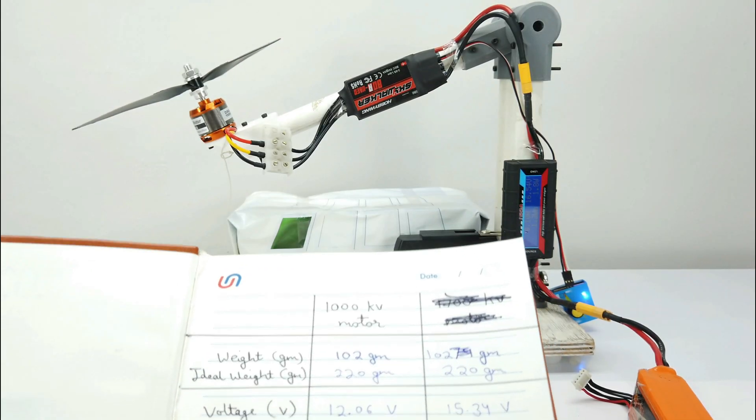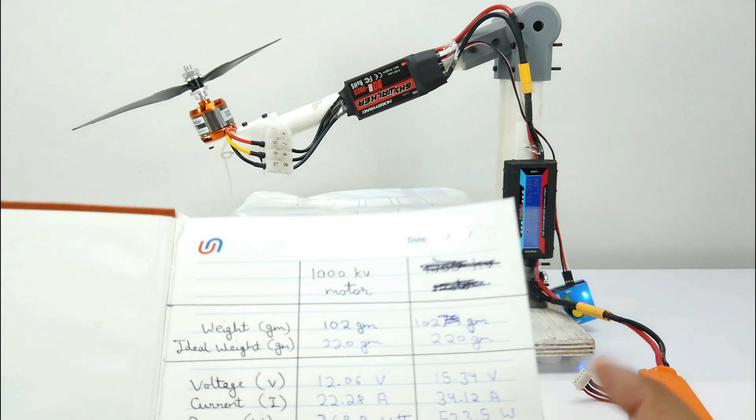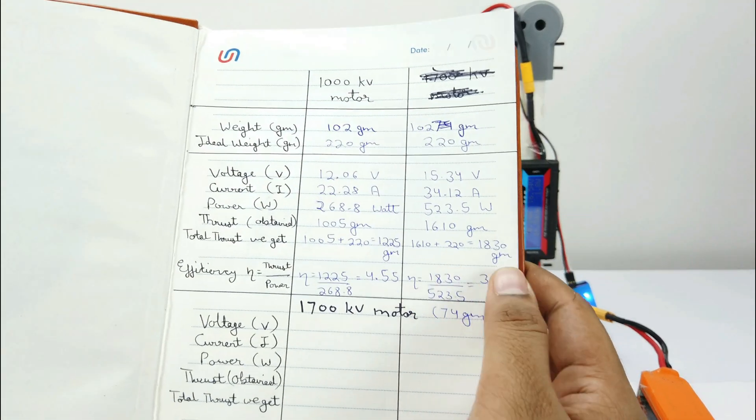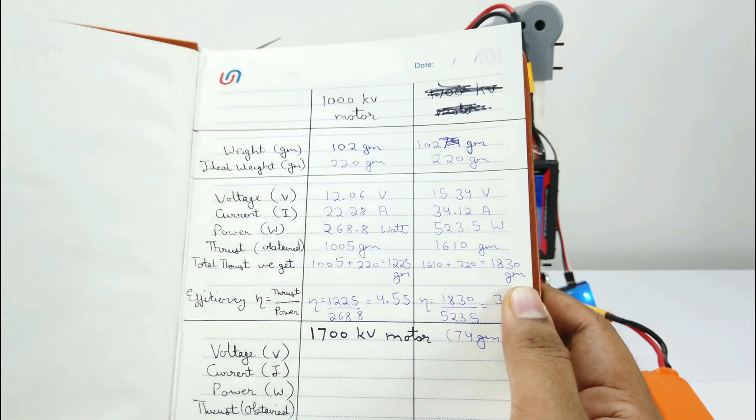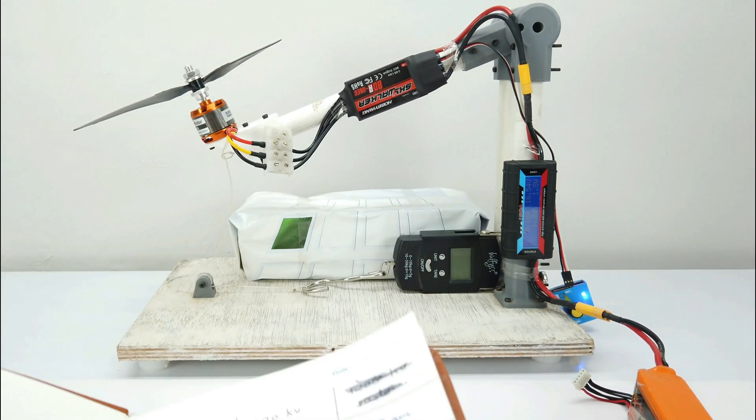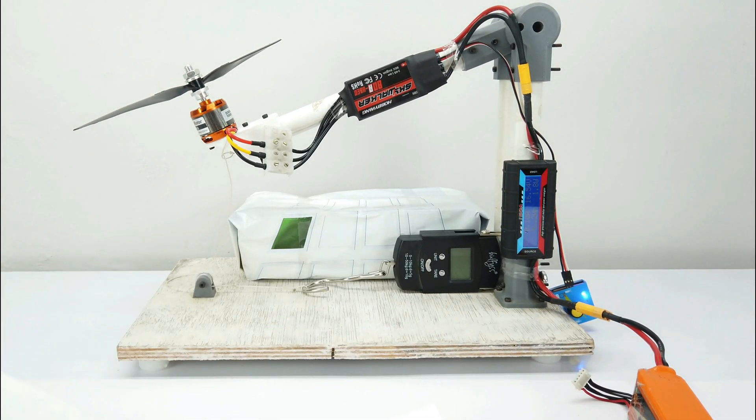So I tested using this battery as well. Here I got a lot of thrust. The obtained thrust was 1640 grams and the total thrust we got is 1830 grams which is quite a lot. And I got the efficiency of 3.49. So I will draw a well detailed conclusion of this in the last.